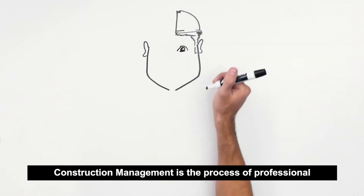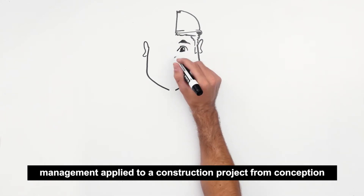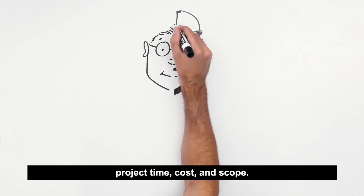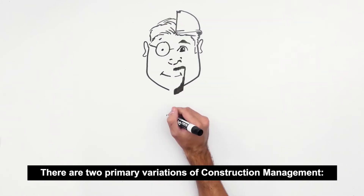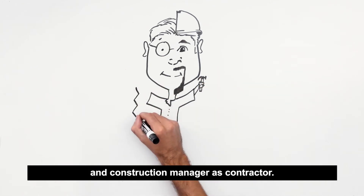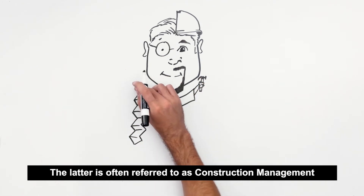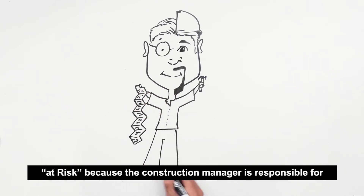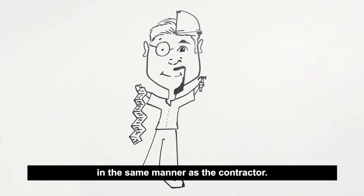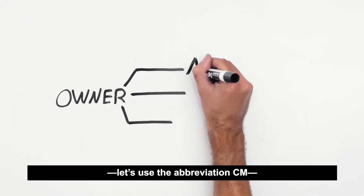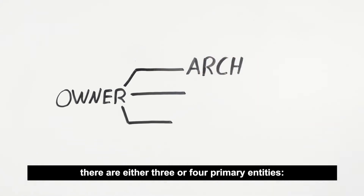Construction management is the process of professional management applied to a construction project from conception to completion for the purpose of controlling project time, cost, and scope. There are two primary variations: construction manager as agent or advisor, and construction manager as contractor. The latter is often referred to as construction management at risk, because the construction manager is responsible for the completed project and bears the financial risk in the same manner as the contractor. When an owner chooses the construction management method — let's use the abbreviation CM — there are either three or four primary entities.